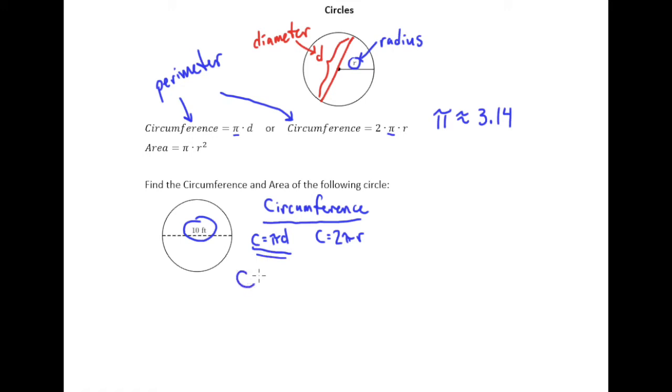So circumference is going to be about equal to 3.14 times 10. And the nice thing is when you multiply by 10 all that's going to happen is the decimal is going to move over one so the circumference of this circle is about 31.4 feet.